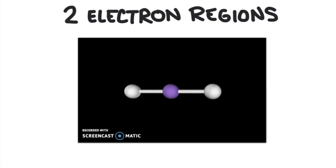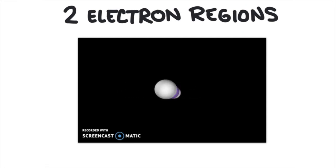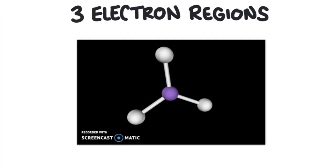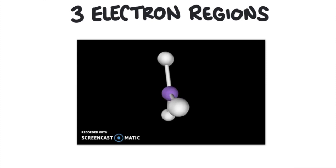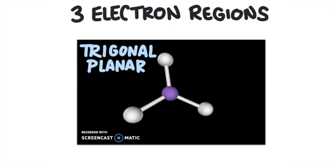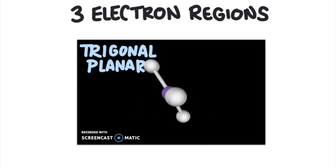If we have two electron regions around a central atom, they'll be spaced out in a line. This electron geometry is called linear and the angle is 180 degrees. Now three electron regions will be spaced across the central atom like this. The electron geometry is called trigonal planar — trigonal is the geometrical name for this triangle shape, and planar refers to the fact that it's flat. The angle is 120 degrees.